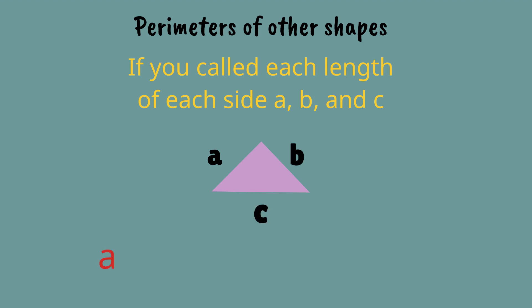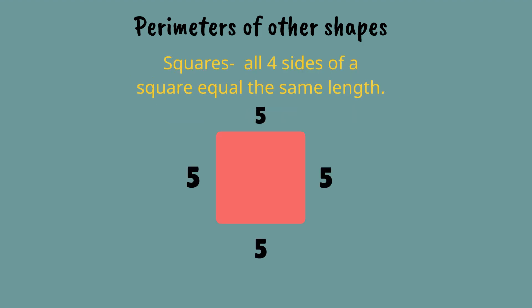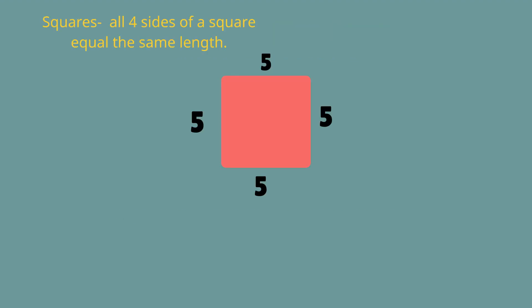If you call the length of each side a, b, and c, then the perimeter equals a plus b plus c. Let's try one more: squares. All four sides of the square are the same length, so let's say the length is 5. The perimeter of a square is 4 times the length of a side. In this case, the perimeter equals 4 times 5, which equals 20.